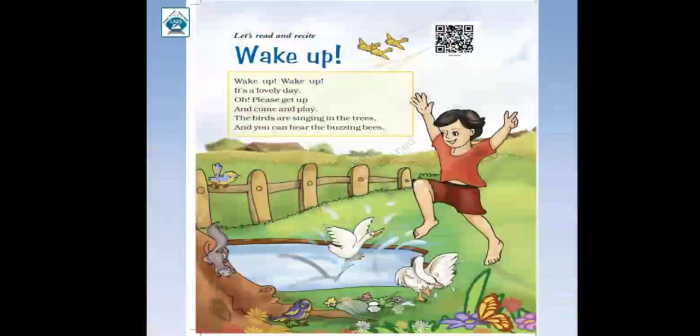Ek doosare ke saath khel raha hai. Jo hum abhi is picture mein dekh sakte hain — ek boy hai jo bhi khel raha hai, bahut happy feel kar raha hai, bahut khush hai. Aur birds bhi bahut khush lag rahe hain, aaju baaju jo bhi hain sab creatures — sabhi khush lag rahe hain aur khel rahe hain aapas mein. The birds are singing in the trees — jo trees ke paas birds hain vo bhi sing kar rahe hain, ek doosare ko good morning keh rahe hain.